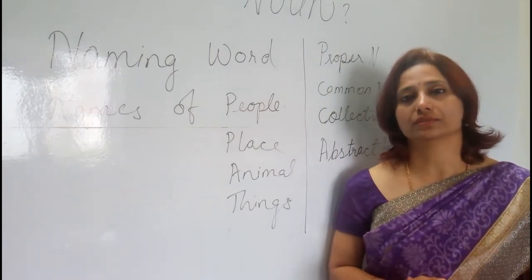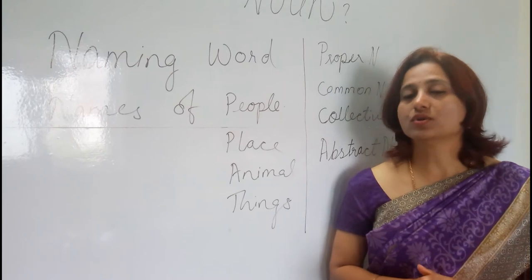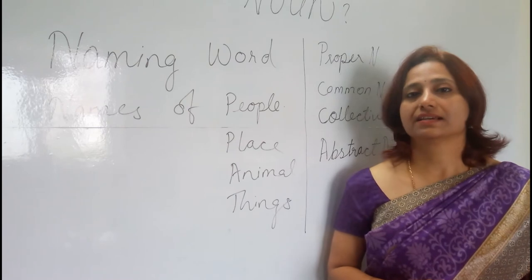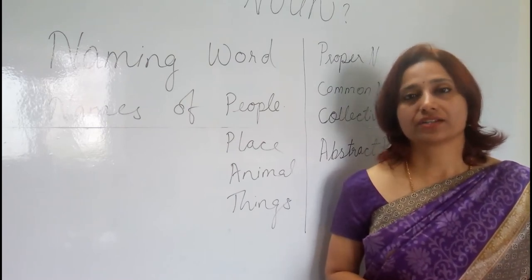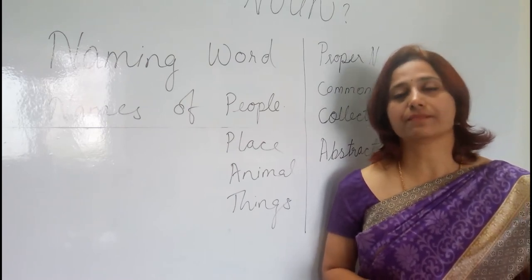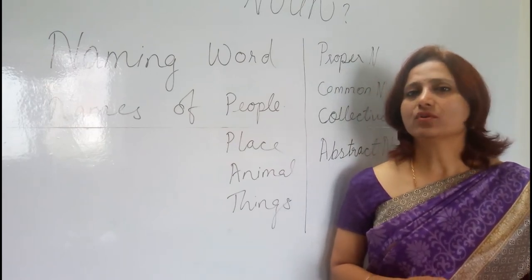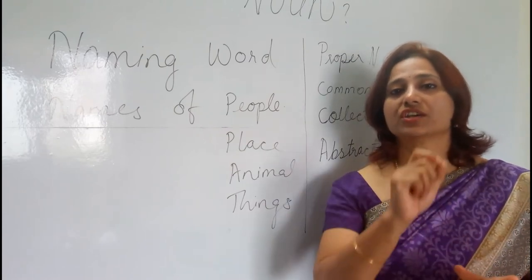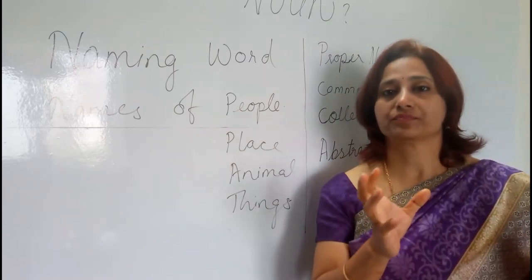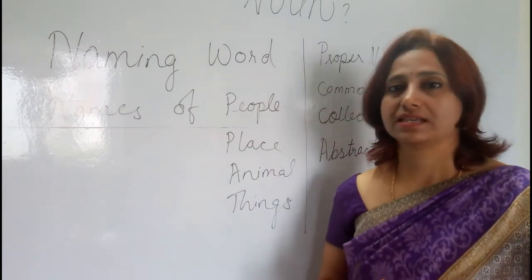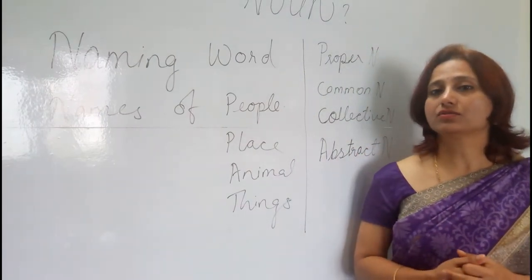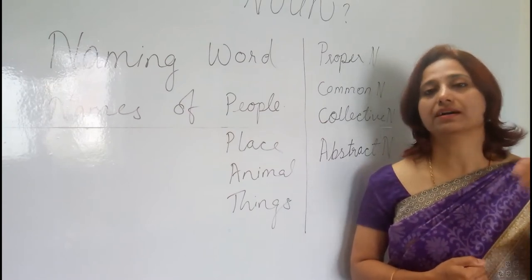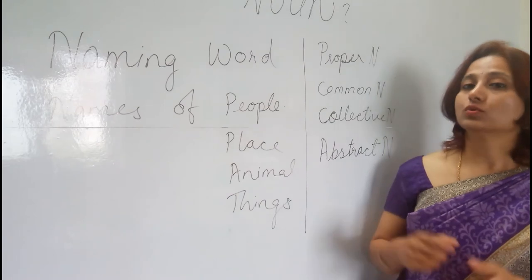Animals are usually common nouns. However, if you have a specific pet, you give it a name just as we name human beings. If you have visited the zoo, each animal — especially the big wild animals — is given a name. During Dasara, the elephants are also given names like Arjuna, Bhima, and so on.